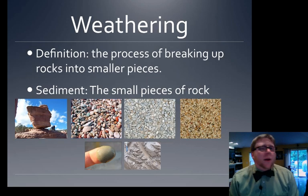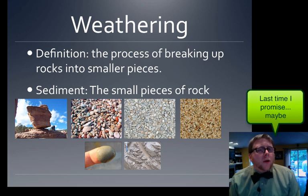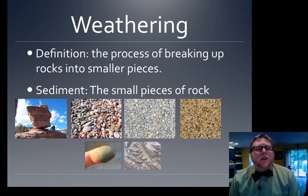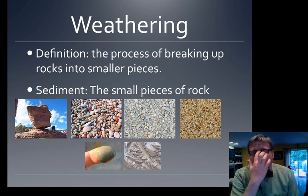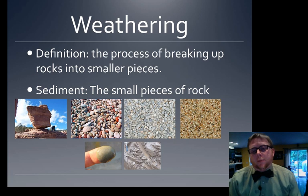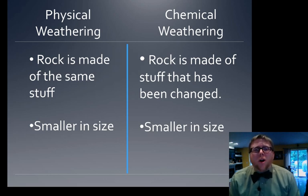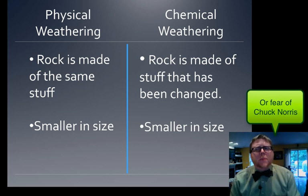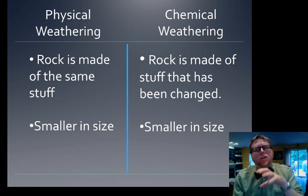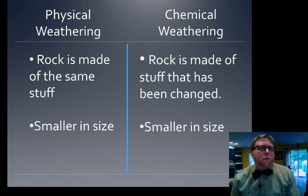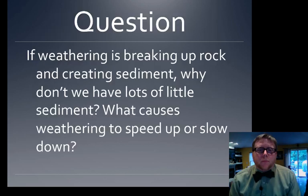By now you should have memorized: weathering is the process of breaking down rocks into smaller pieces called sediment — from boulders all the way down to clay or silt. There are two types: physical weathering, where the rock stays the same type but gets smaller through water, gravity, or smashing; and chemical weathering, where the molecules actually change, through acids, dissolving, or oxidation.